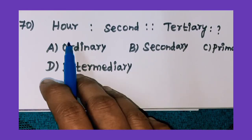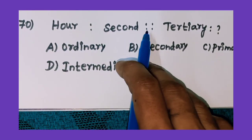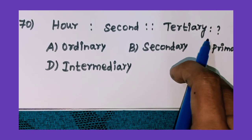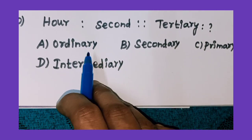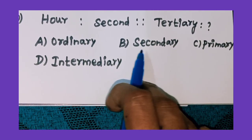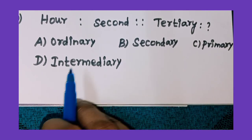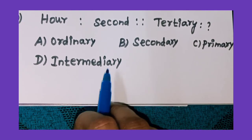70th question: hour is to second as tertiary is to what? Option A: ordinary, option B: secondary, option C: primary, and option D: intermediary.